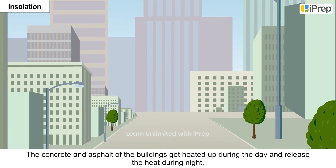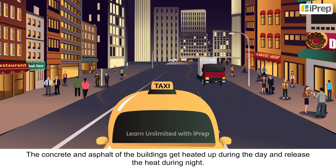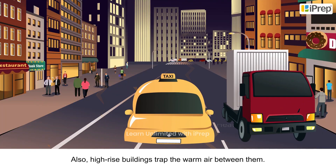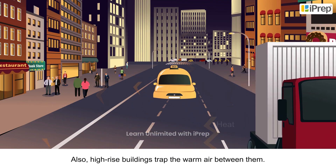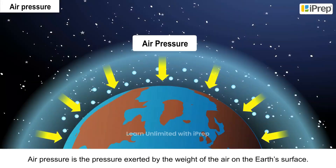Temperatures in cities are much higher than that of villages. This is because the concrete and asphalt of the buildings get heated up during the day and release the heat during night. Also, high-rise buildings trap the warm air between them.